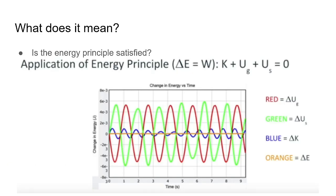So what does it mean? So the work done is equal to the change in total energy, and then as you can see in the graph, the orange line, which is the change in energy, is at zero. Therefore the energy principle is satisfied.